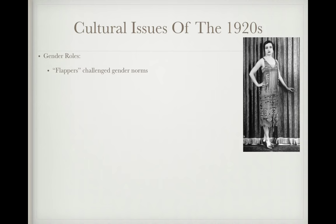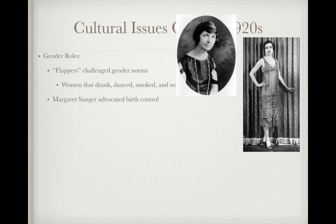Gender roles were a major cultural topic during the 1920s. Flappers challenged gender norms — women who drank, danced, smoked, cut their hair short, and wore shorter dresses. Margaret Sanger emerged as a women's rights advocate, promoting birth control, which was very controversial at the time. The Equal Rights Amendment was introduced in the 1920s but was not approved by Congress until 1972, and even then was not added to the Constitution.